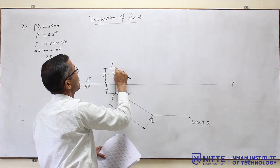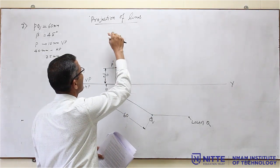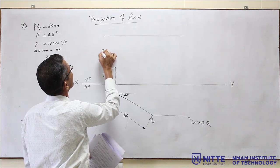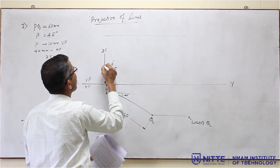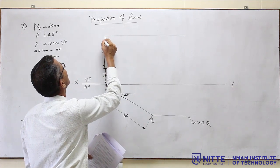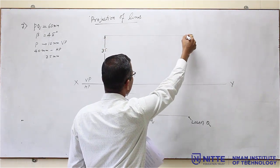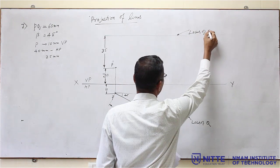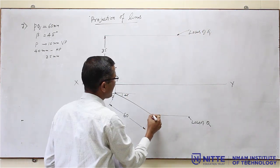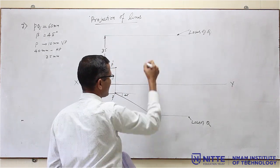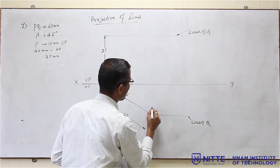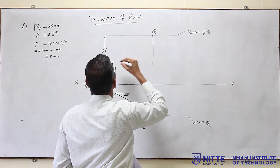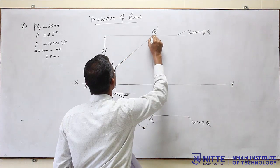From P dash, you have to measure a distance of 35mm. This is 35mm from P, so in this line Q dash should be located. Draw a line parallel to the XY line — this is the locus of Q. Since Q is already located in the top view, Q dash should be exactly above it. Project a vertical line — this is the end projector — and call this as Q dash. Join P dash Q dash by a dark line.